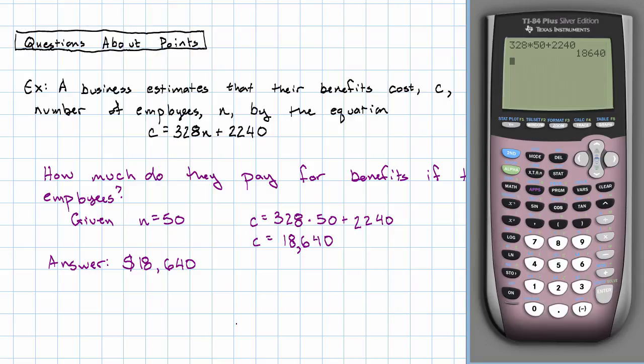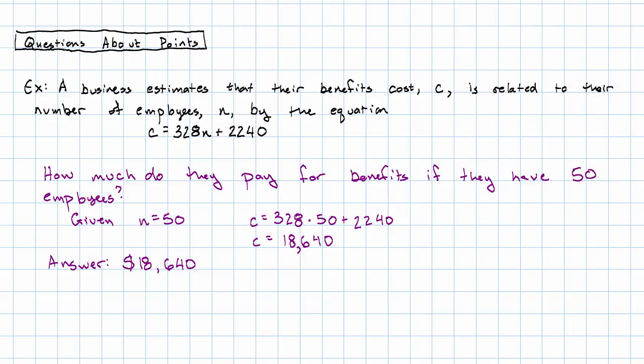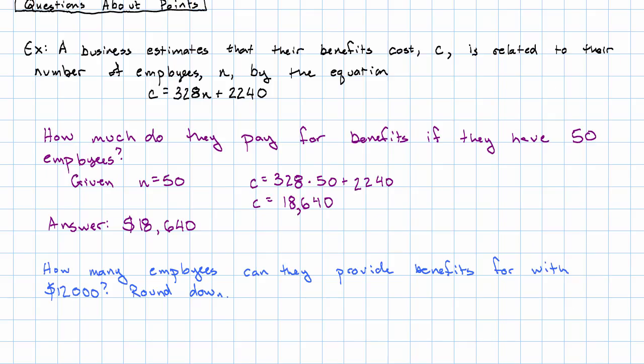We might also be given a value of C and asked to find a value of N. We might be asked, for example, how many employees can they provide benefits for with $12,000? Round down because we're probably not going to get a whole number. This is not giving us a value of N.